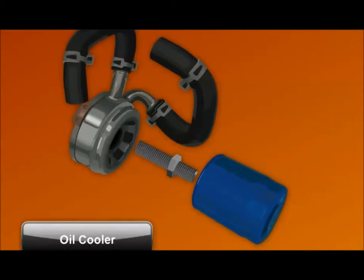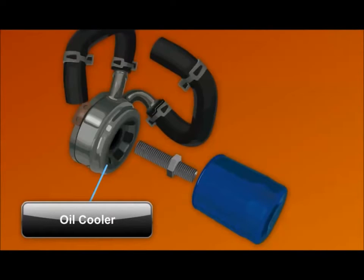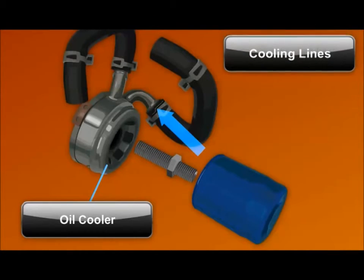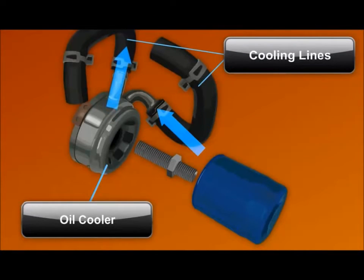Some engines use an engine oil cooler at the filter to transfer heat into the cooling system. One coolant line delivers coolant to the oil cooler, while a second line sends the coolant and heat into the engine water jacket.